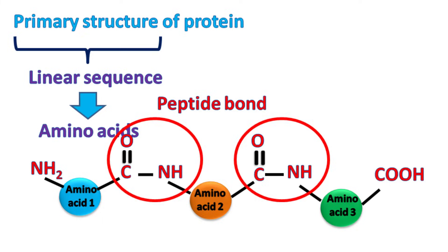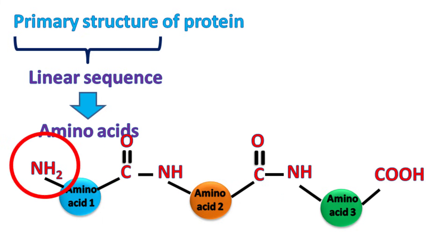The primary structure of protein is always written from the N-terminal of the first amino acid to the C-terminal of the last amino acid.